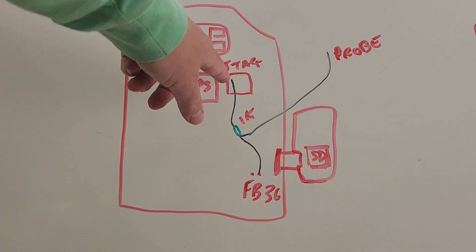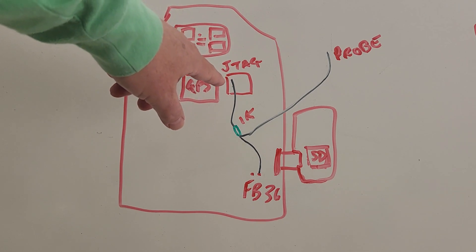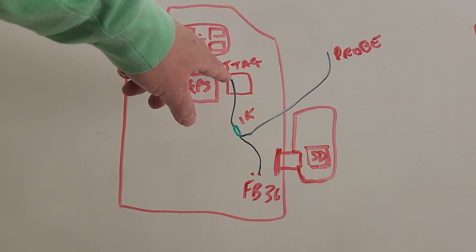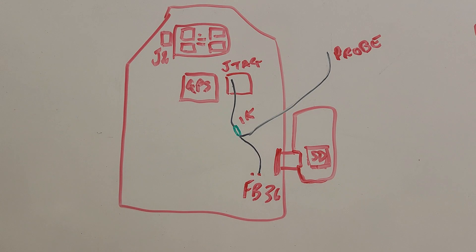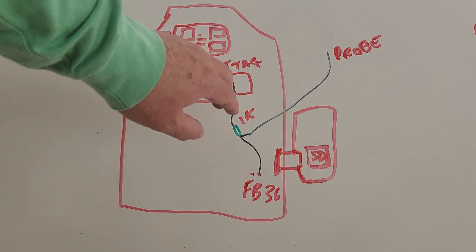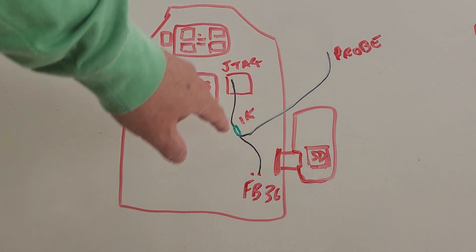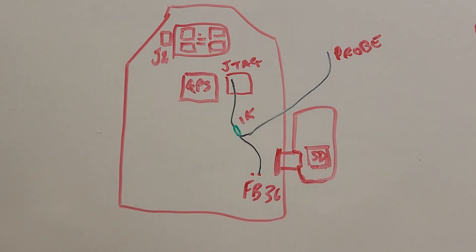You can see the wiring goes from, I'm pulling power in this case from pin 1 of the JTAG, and I often do that because it's got a bigger pad, it's easier to solder onto. And then I come down to a 1K resistor, which then splits out to my probe and to the right-hand side of the FB36.